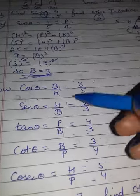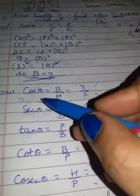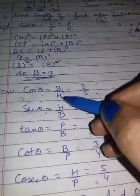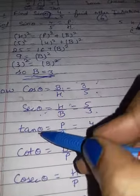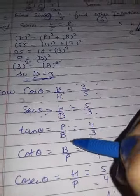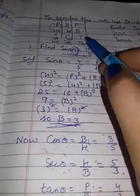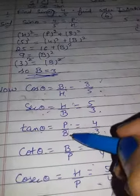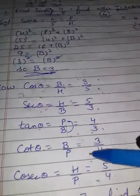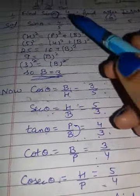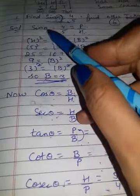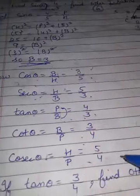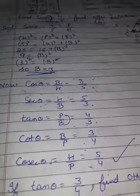Base upon hypotenuse. You know cos and secant are reciprocals of each other, so secant is 5 by 3. Tan is P upon B. Cot is the reciprocal of tan. Cosecant: you know sine's reverse — sine is 4 by 5, so cosecant becomes 5 by 4.